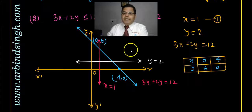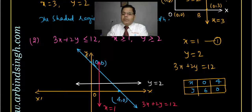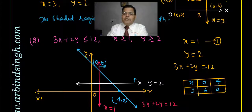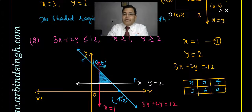Now we have to find the common feasible region satisfying all three inequalities. Checking (0, 0) for x > 1: not satisfied, so that region is away from origin. For y > 2: also not satisfied, away from origin. For 3x + 2y < 12: 0 < 12 is satisfied, so that is towards the origin. The feasible region is above x = 1, above y = 2, and below the line 3x + 2y = 12.